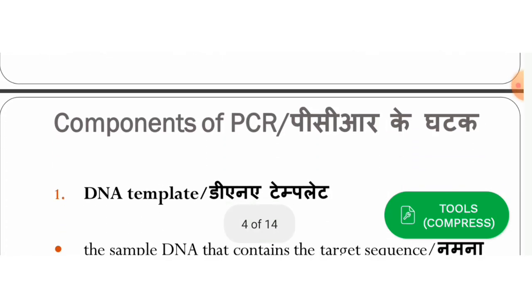What are the major components in PCR? There are four major components. You need: template DNA, primers, deoxynucleotides (dNTPs), and polymerase enzyme.